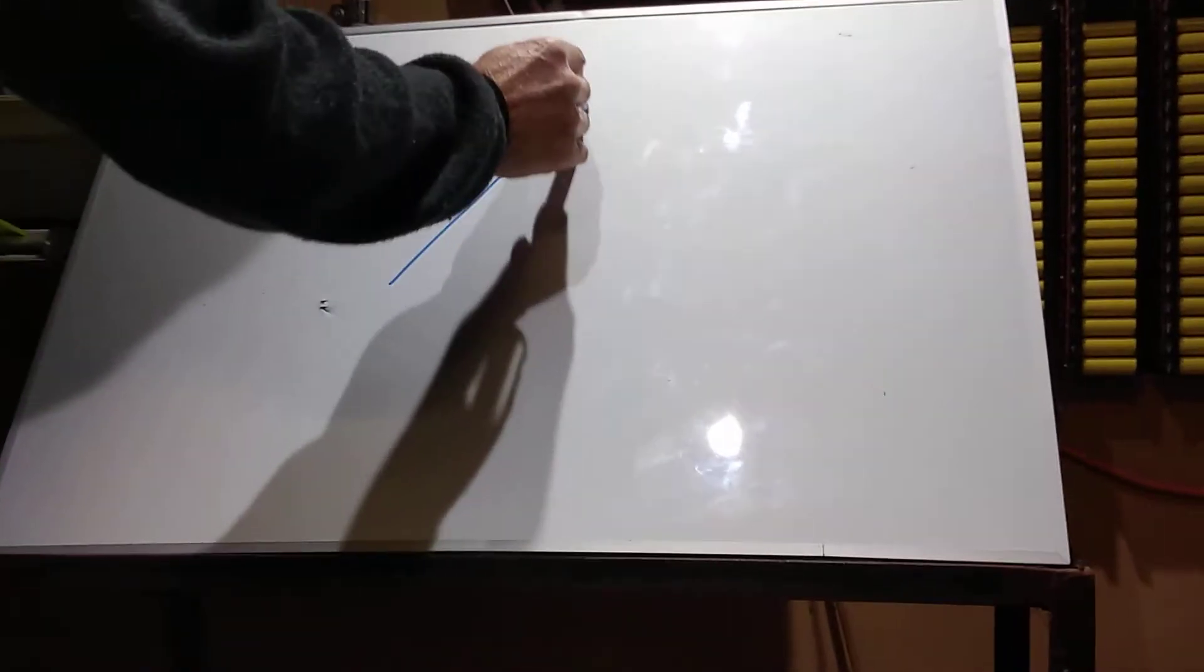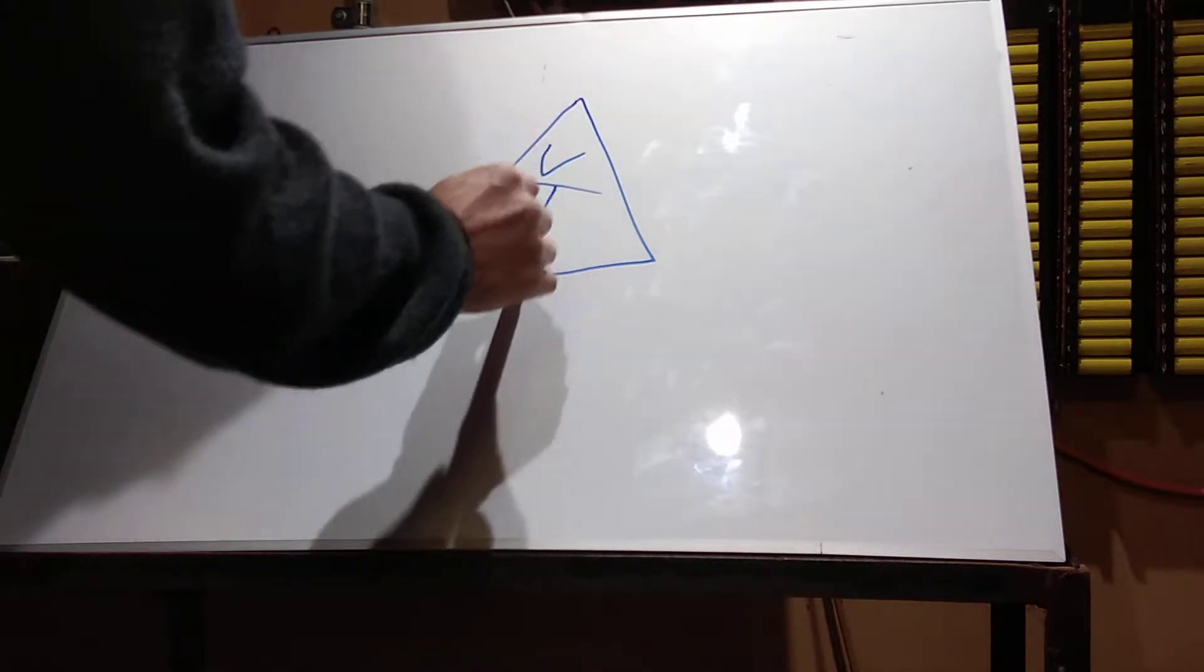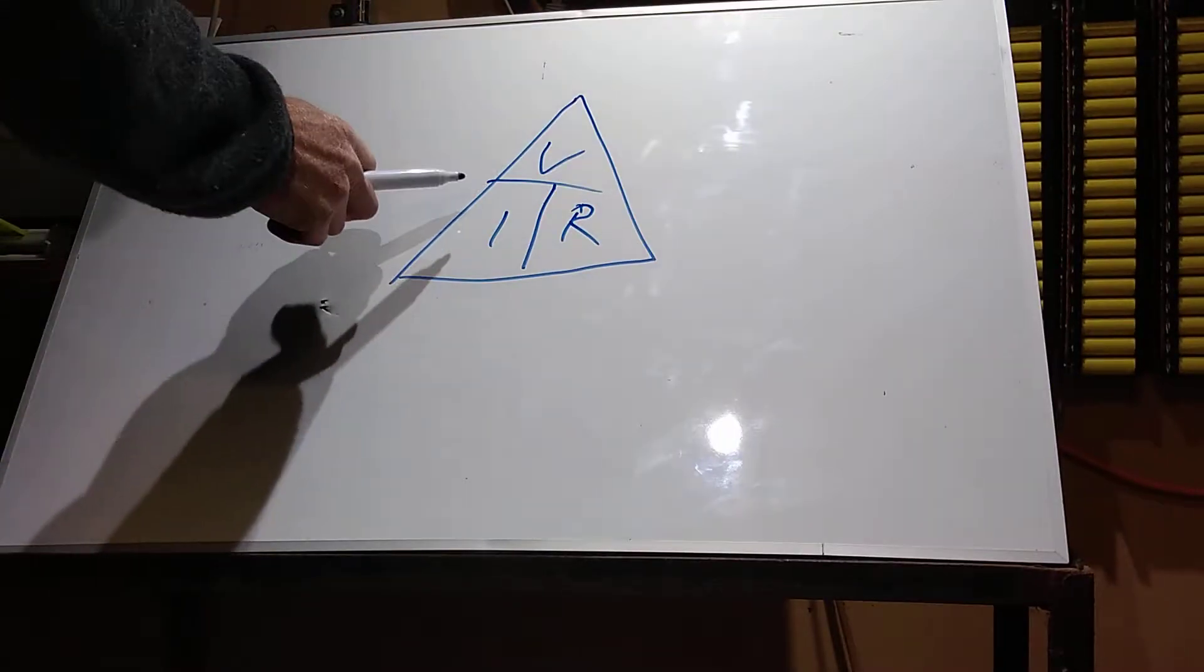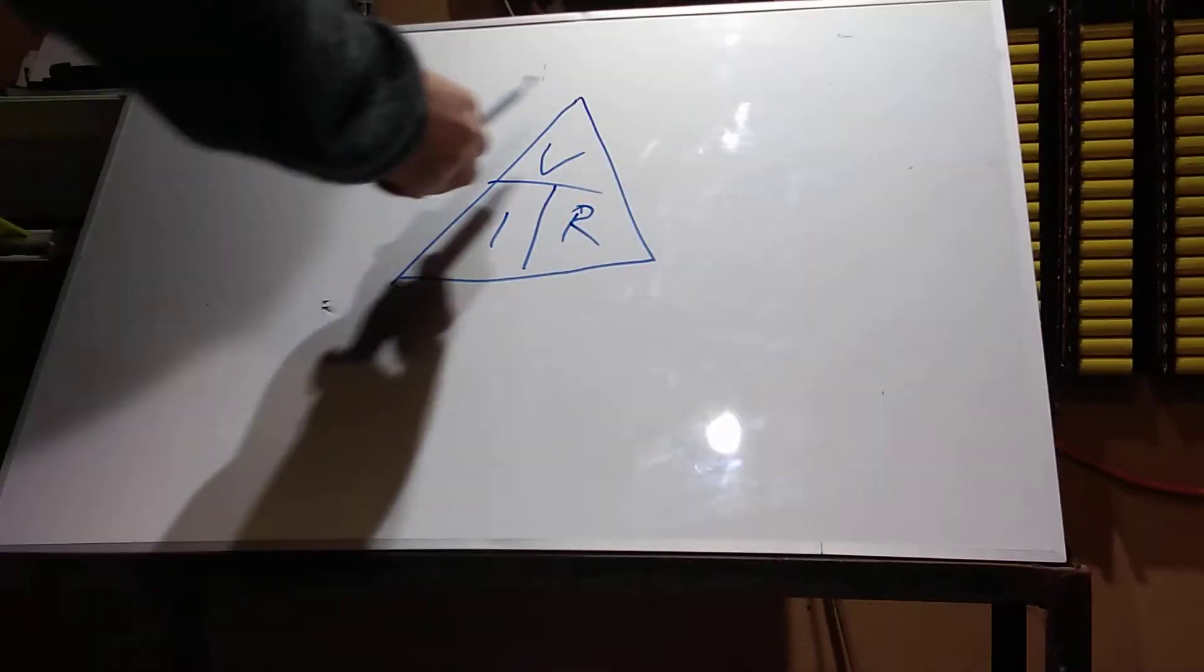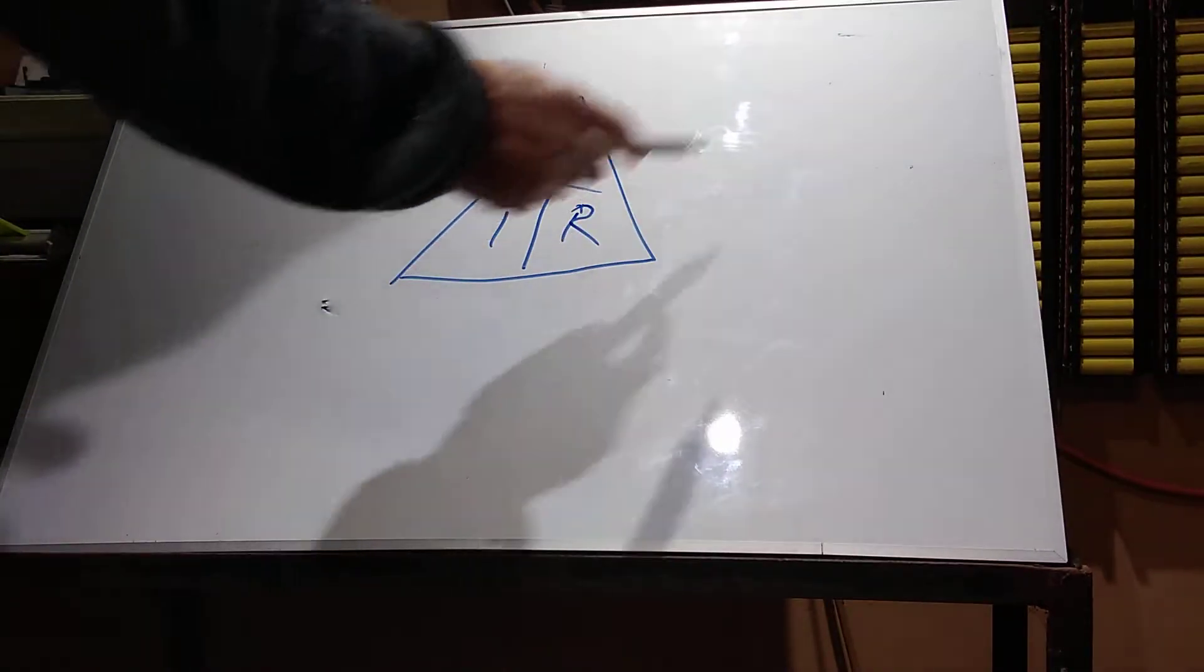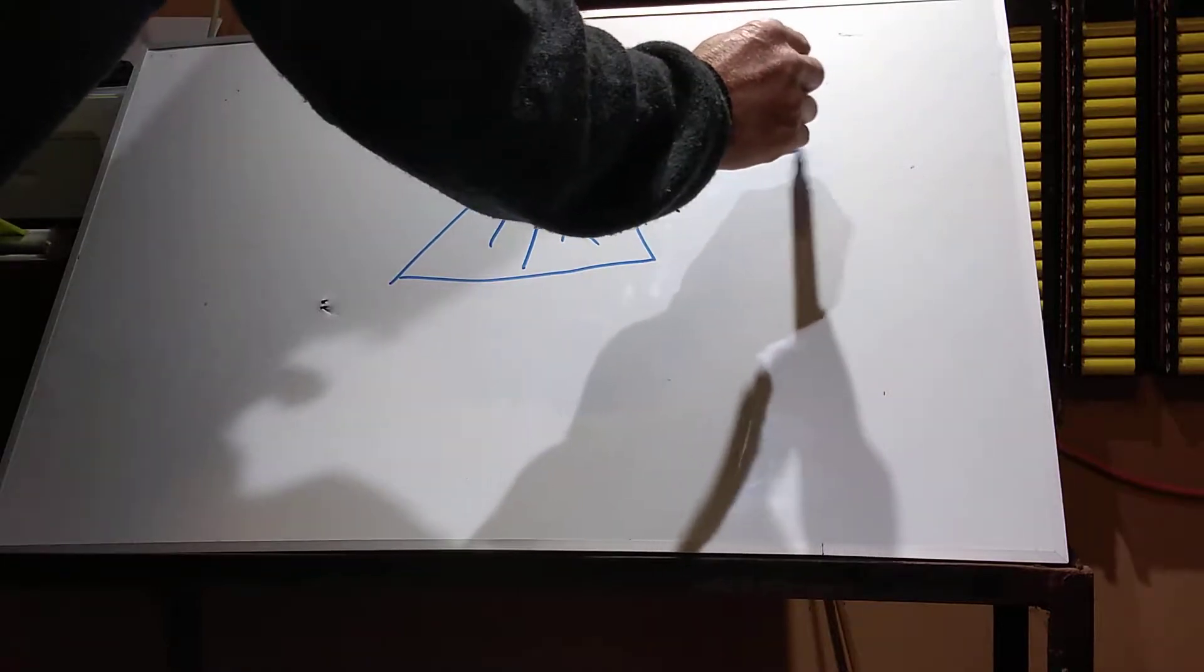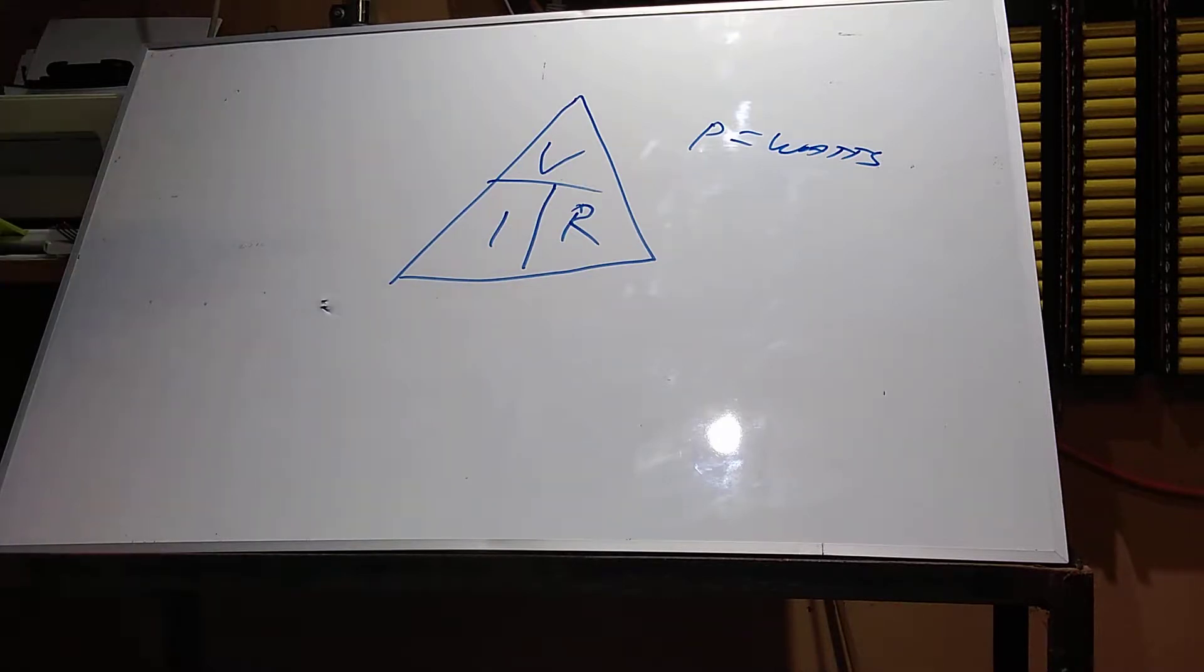So I'll get the whiteboard out and we'll just go over it a little bit. In electronics, you must know the triangle, where V over I times R. Volts divided by amps times resistance. It's all relative. But where's P? What's P? What does it all mean?